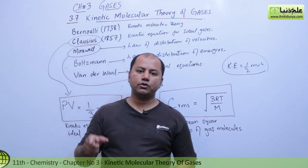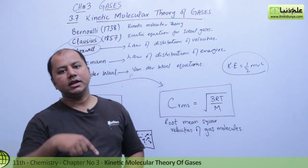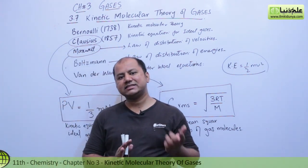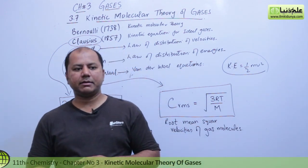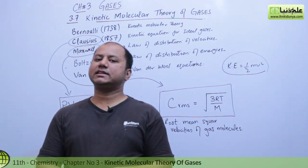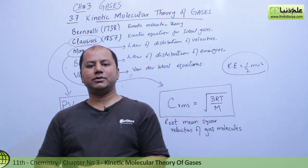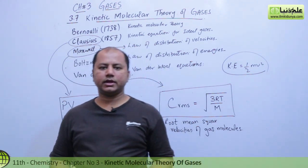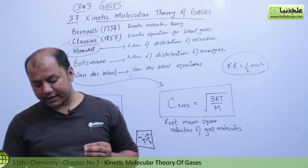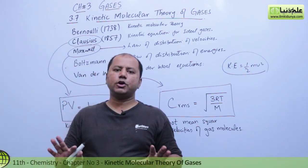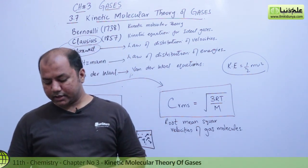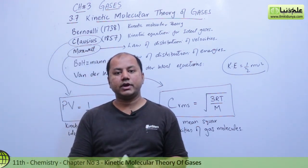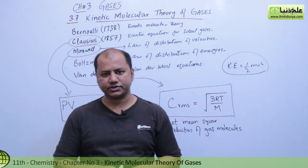Regarding volume: 22.414 decimeter cubed is the volume in which Avogadro's number of molecules exist. We have taken this volume as a base for the existence or number of molecules. The actual volume of the molecules of a gas is negligible compared to the total volume of the gas. The volume we consider for study is the total volume under the given concentration conditions.